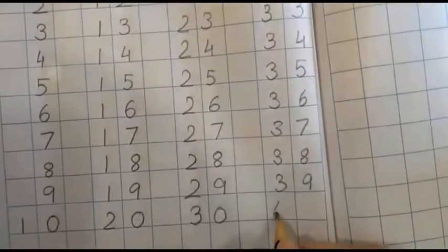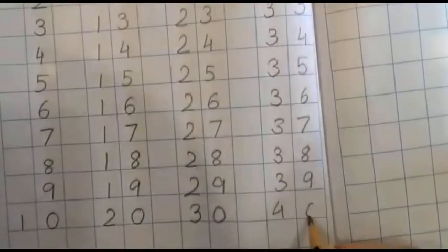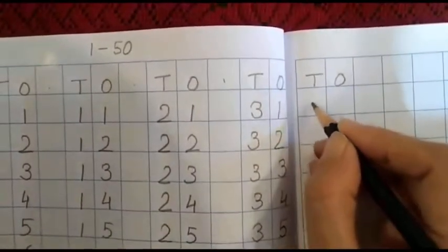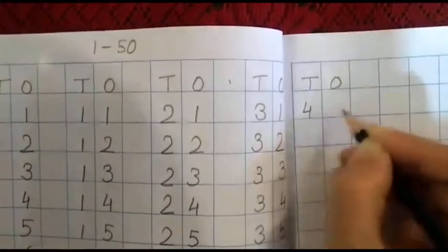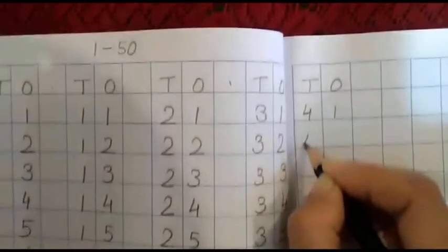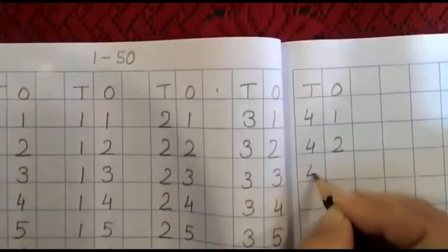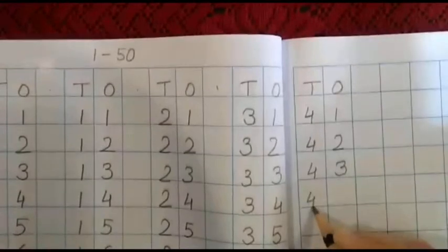Four zero forty, then we will go to the right hand side page where we have written T and O. Under that we will write four one forty one, four two forty two, four three forty three, four four forty four.